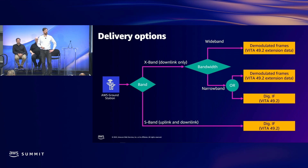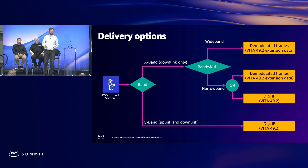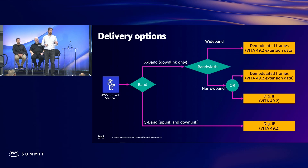The other option is demodulated frames — in certain modes of operation, AWS Ground Station does the demodulation and decoding on your behalf. Depending on the configuration of your mission, you have different choices. In S-band, we deliver digitized IF. In X-band, the choices depend on your bandwidth. In narrowband, you have your choice of either: let AWS Ground Station do the demodulation and decoding, or select DigIF and we'll send you the raw digitized waveform so you can bring your own SDR. In wideband today, you must use AWS Ground Station to do the demodulation and decoding over the bandwidth limit for X-band downlinks.